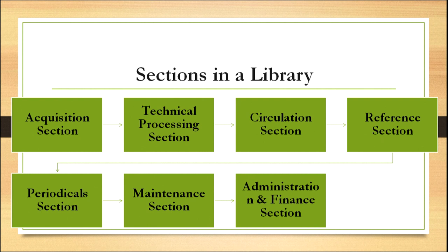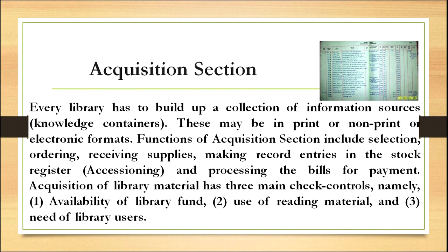A library has different sections: acquisition section, technical processing section, circulation section, reference section, periodical section, maintenance section, and administrative and finance section. Every library has to build up a collection of information sources — these may be in print, non-print or electronic format. Functions of the acquisition section include selection, ordering, receiving, supplying, making entries in the stock register and processing the bills for payment. Acquisition of library material has three main checks: availability of library fund, use of reading material and needs of library users.